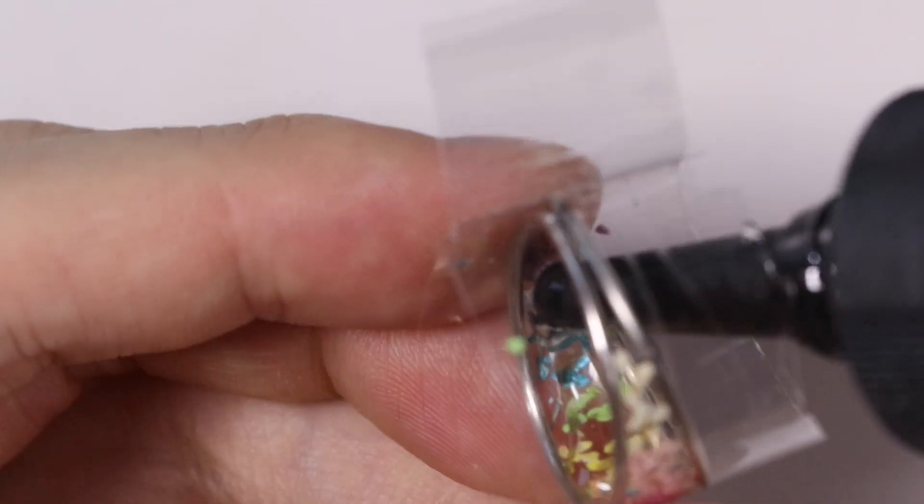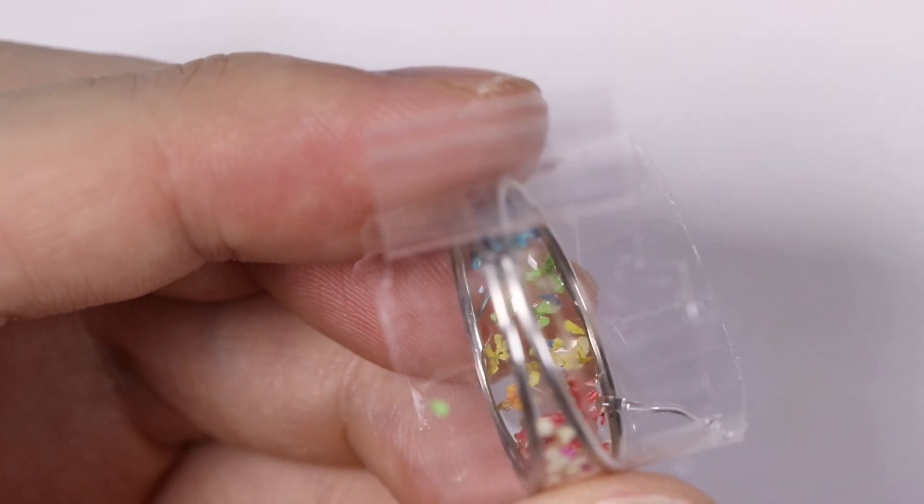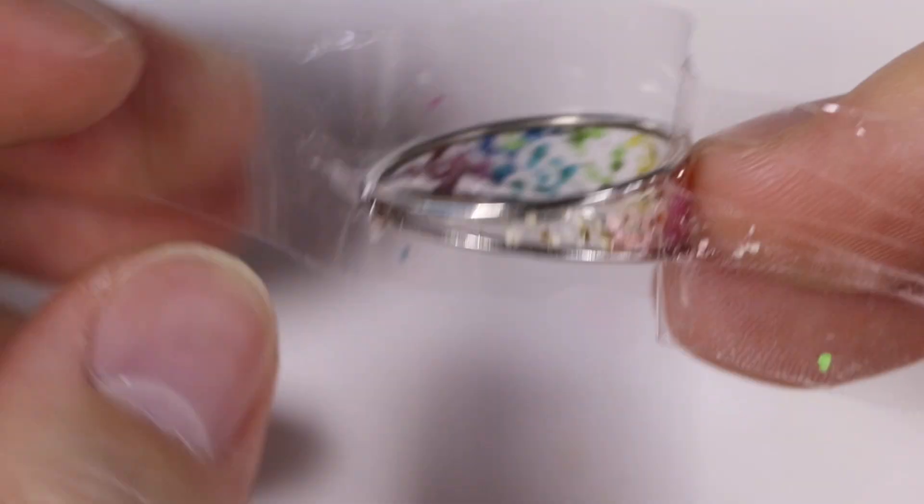After all the flowers are fully set I'm going to place my UV resin inside the ring. And then remove the tape layer.